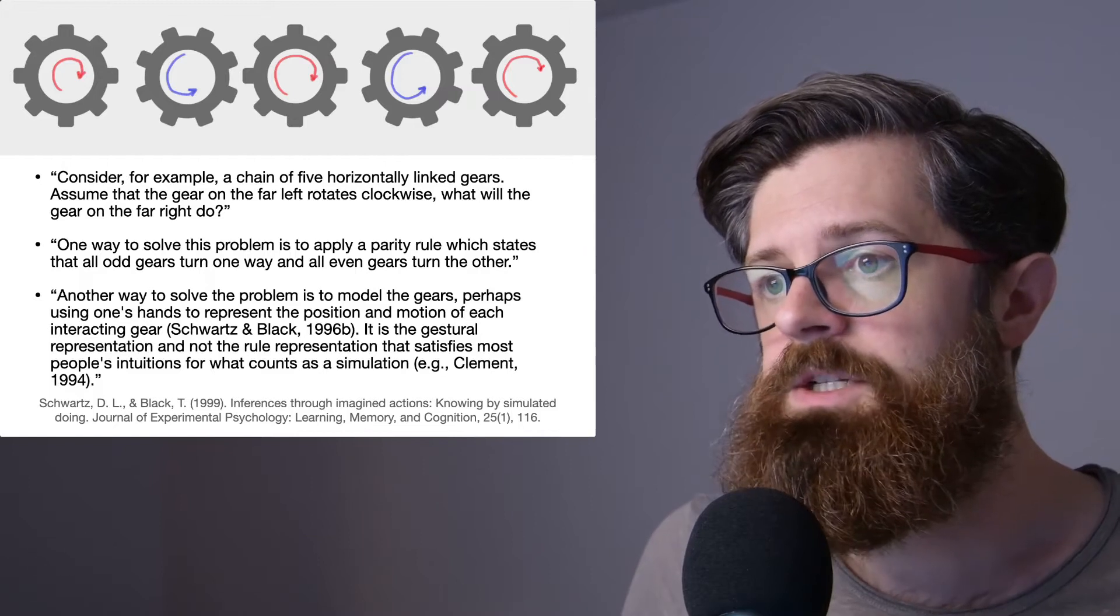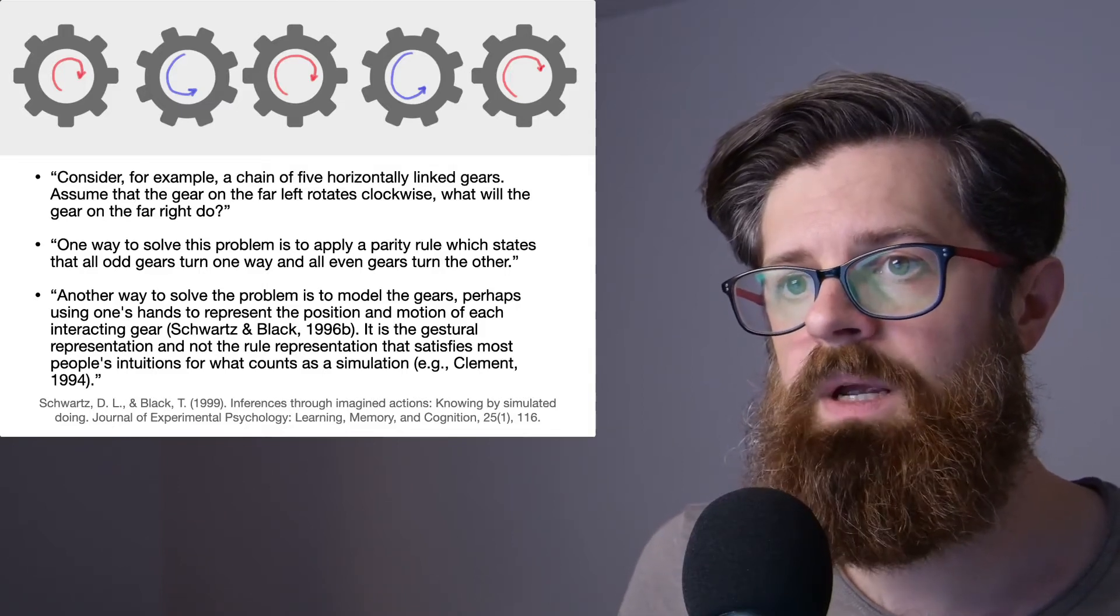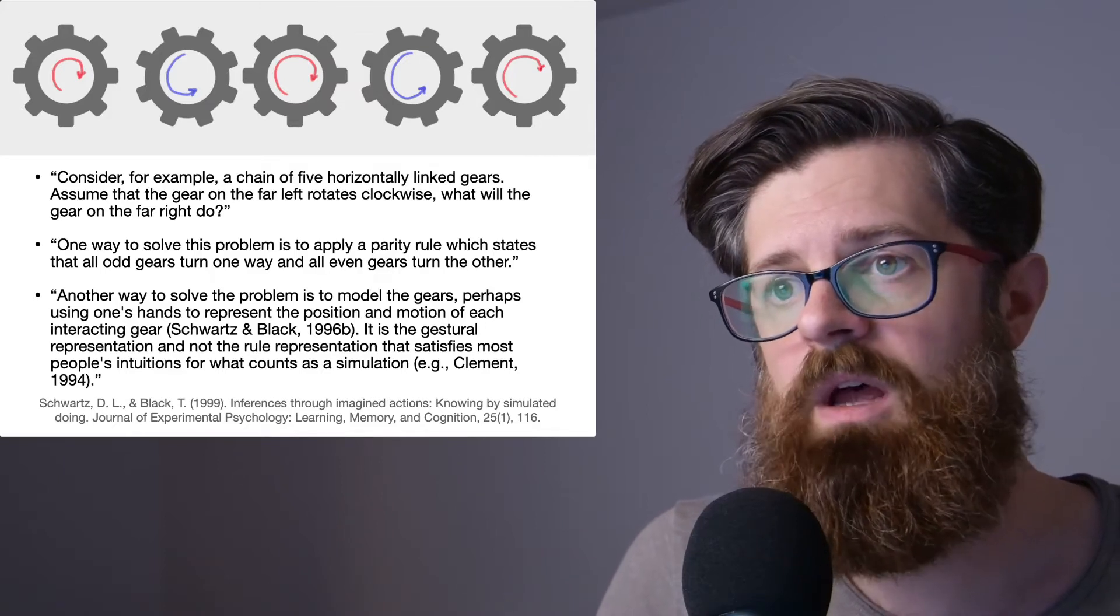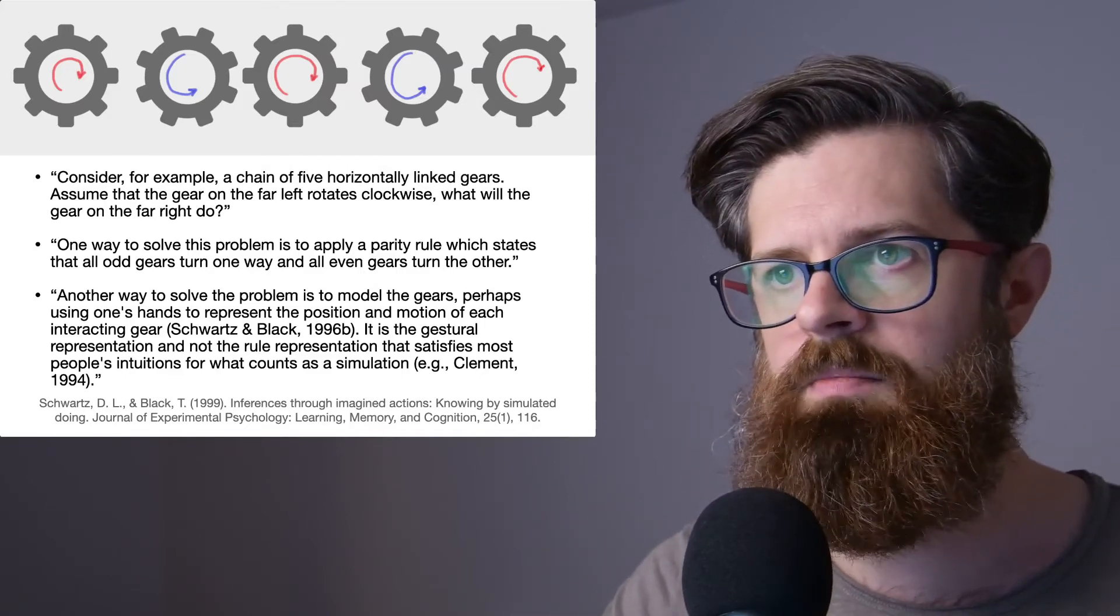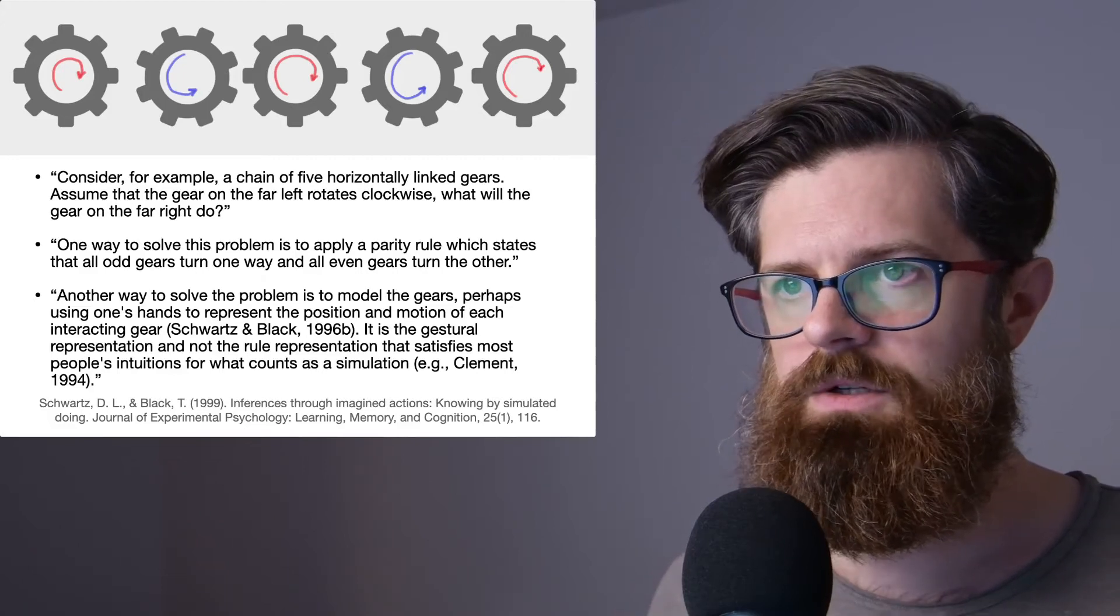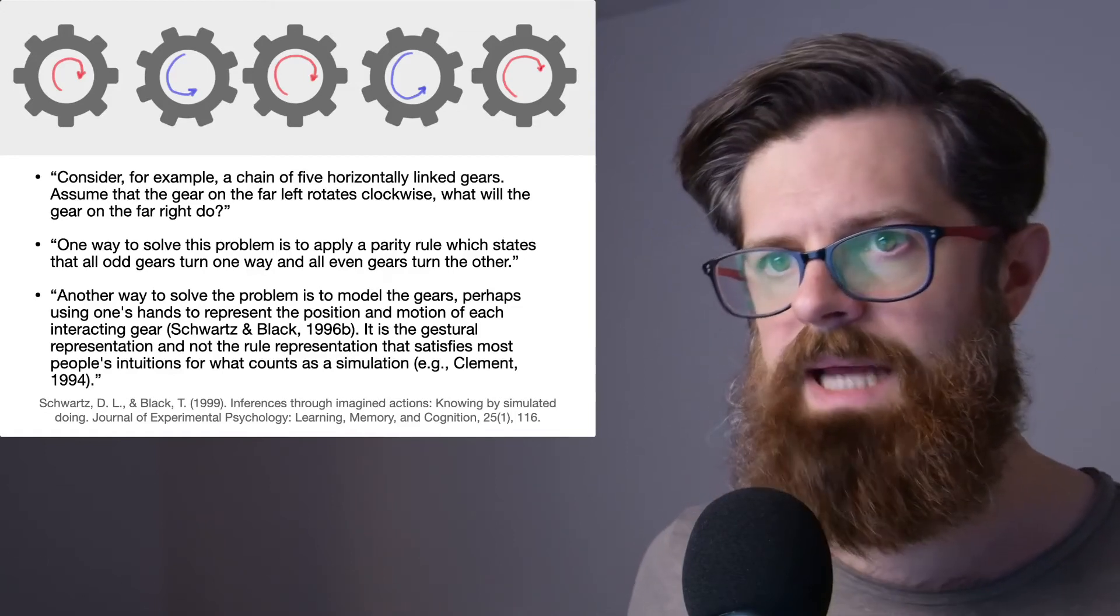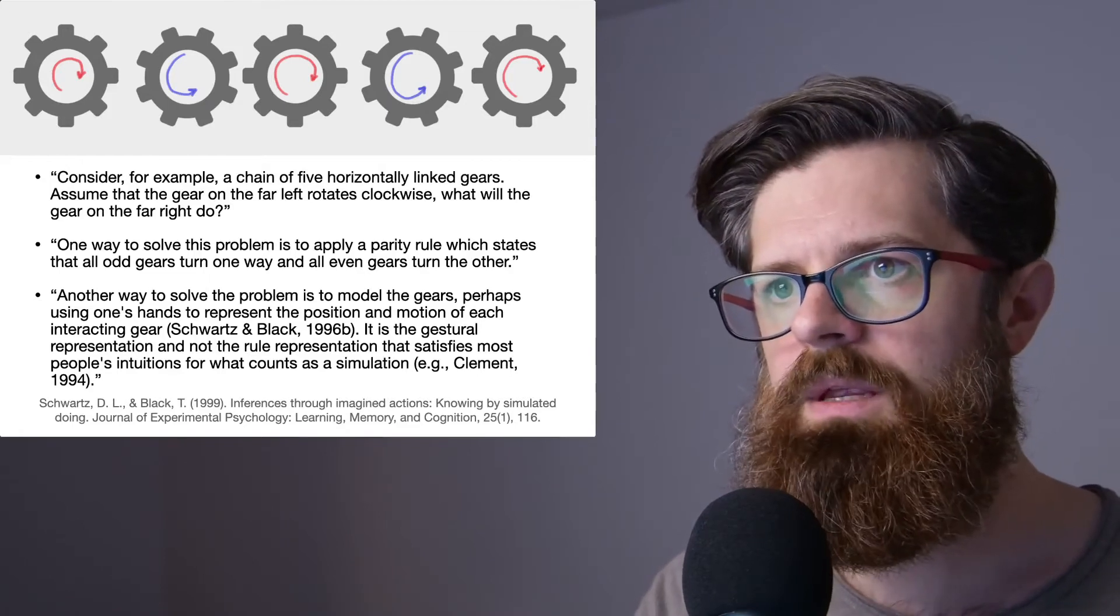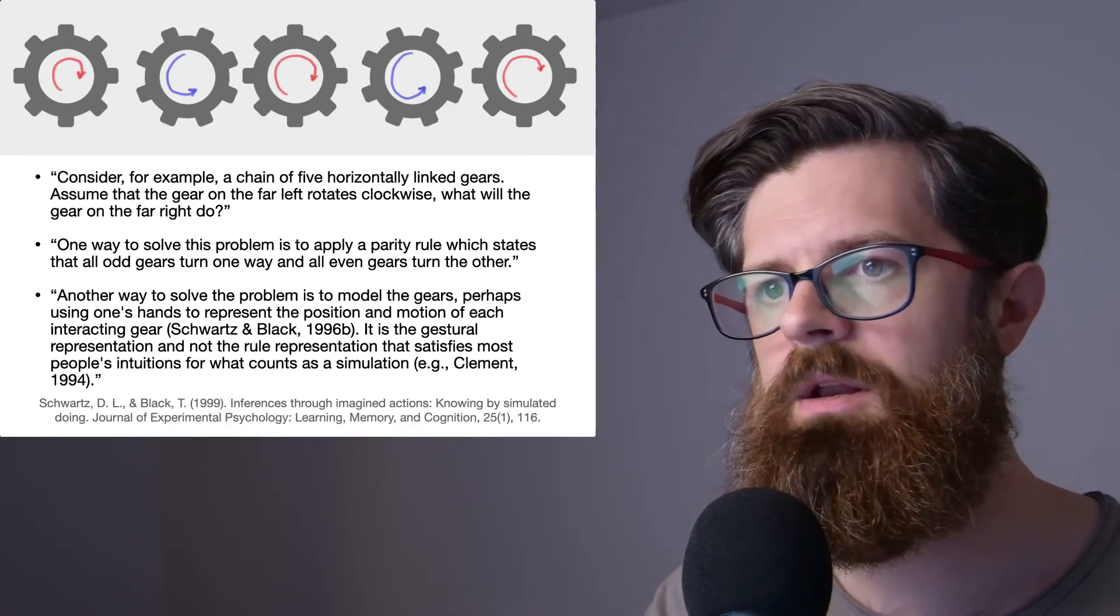Another way to solve the problem is to model the gears perhaps using one's hands to represent the position and motion of each interacting gear. It is the gestural representation and not the rule representation that satisfies most people's intuitions for what counts as a simulation. So this is really interesting. Another way is rather than by using some kind of descriptive rule, what you might do is actually to simulate this, and they talk about potentially using your hands as an aid in order to complete this task. So that was just a quick look at the differences in the ways that you can solve this problem. And I recommend looking in the paper if you're interested in more details about this.